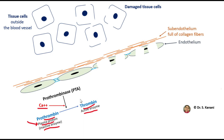The active enzyme produced from prothrombin is called thrombin. This is a very important enzyme with many functions. In a separate video, some of the important functions of thrombin are summarized, but for now let's focus on a few of its key effects.